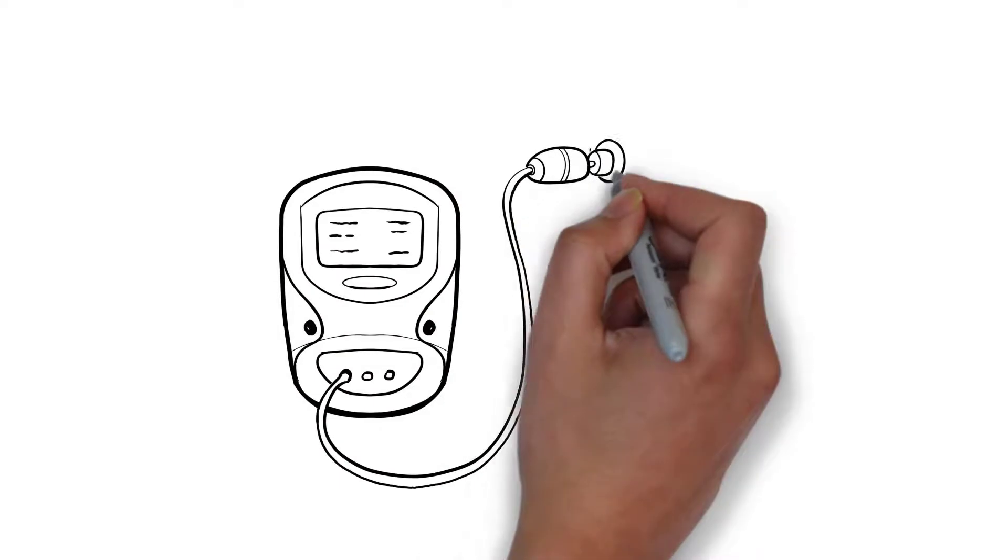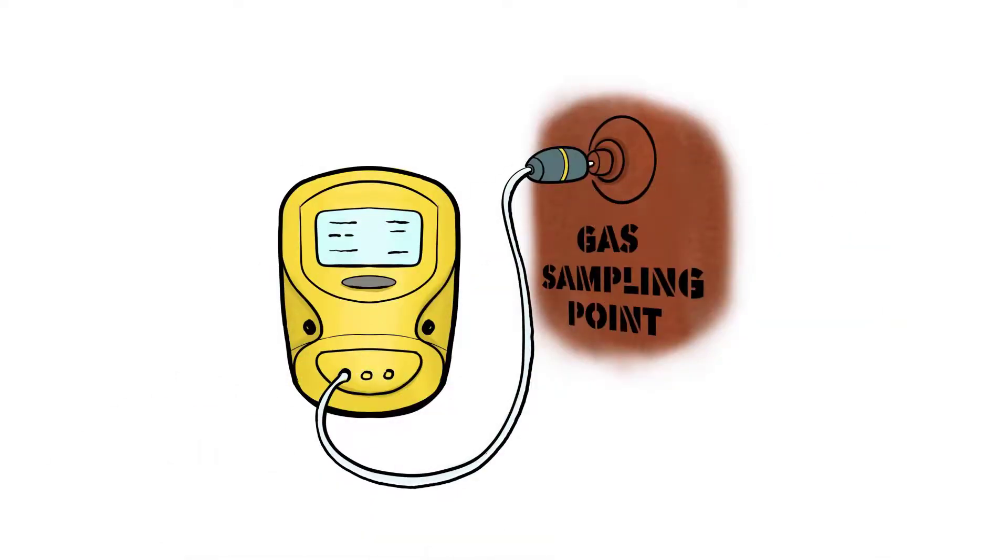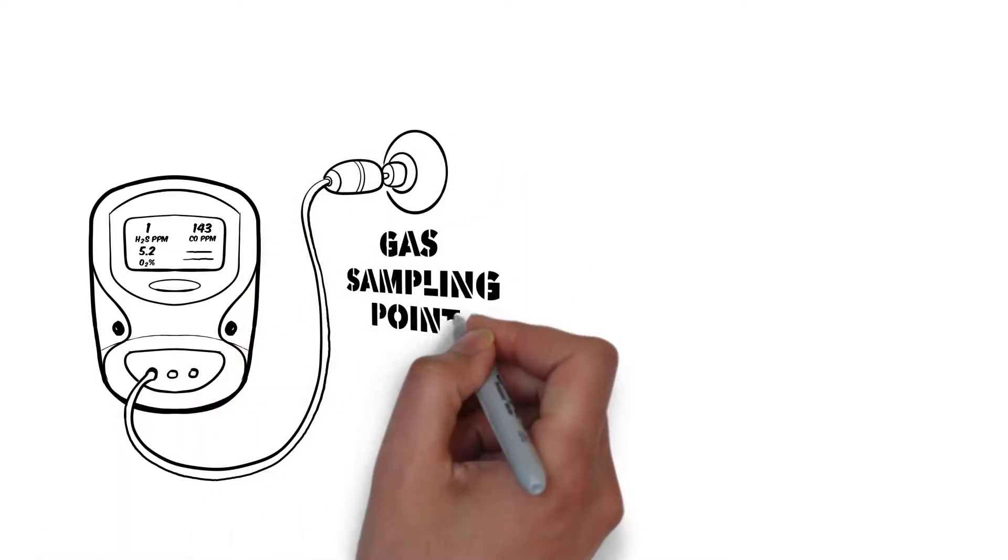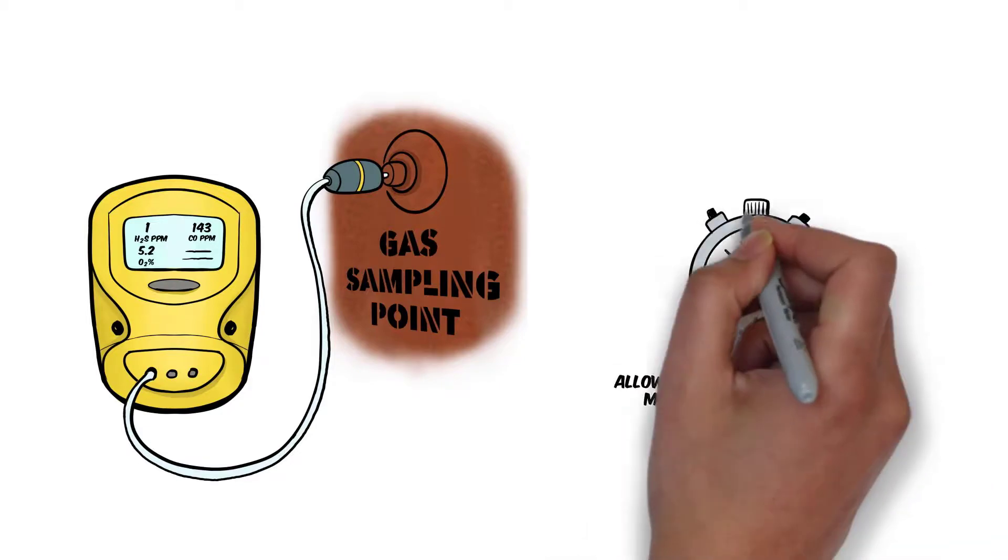Remove the splitter and connect a single tube between the meter and the sampling point. Draw a sample until gas levels are steady. Record the hold atmosphere oxygen, carbon monoxide and hydrogen sulphide levels.